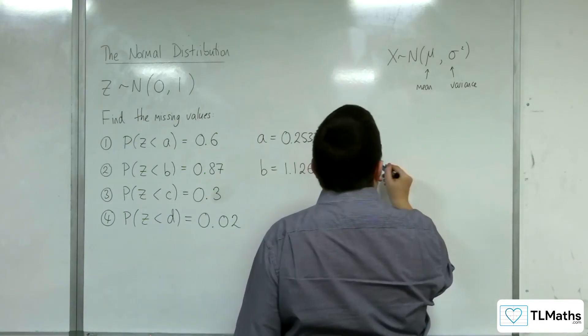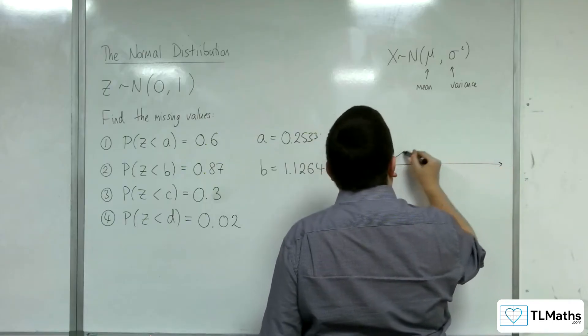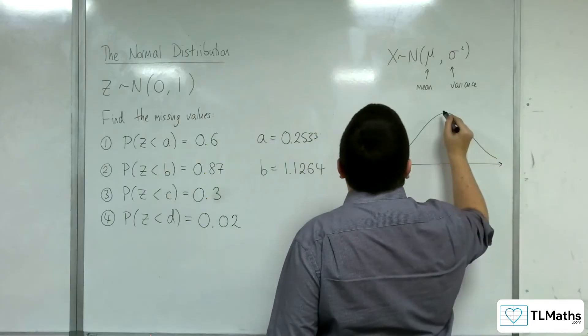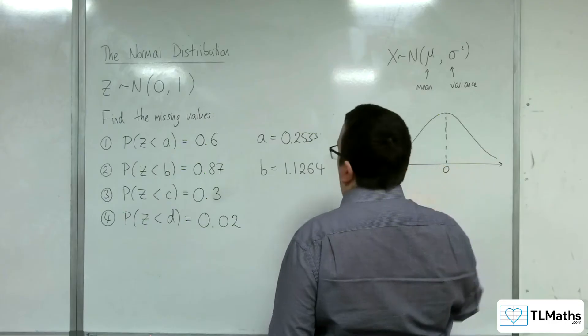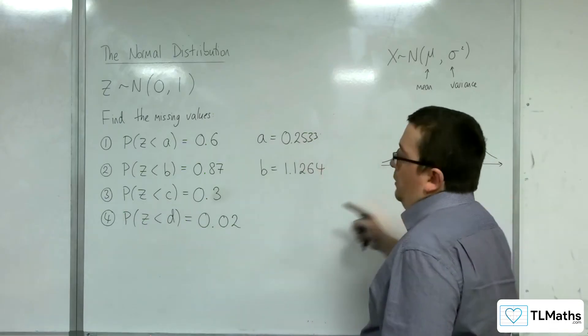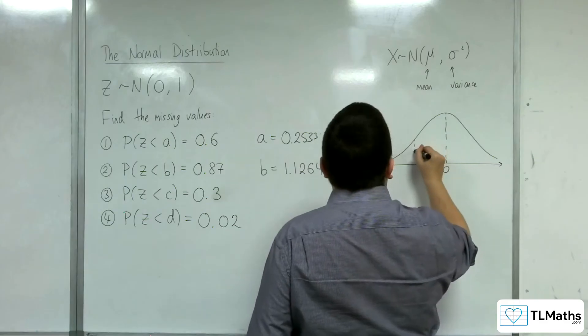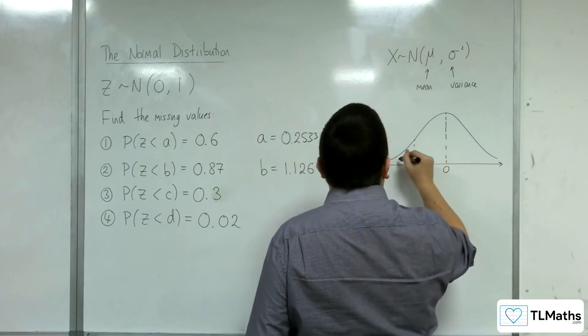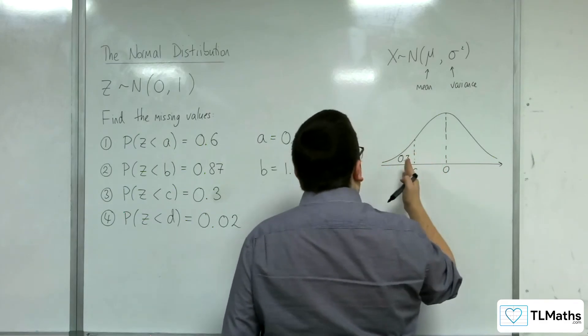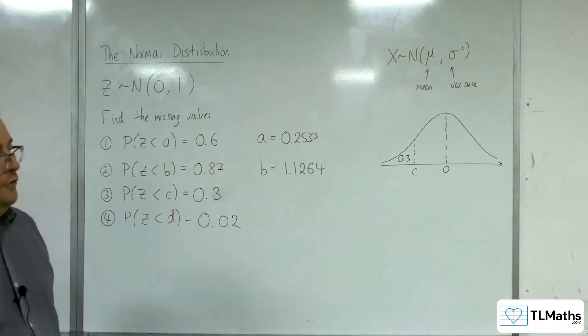Okay, now, for number 3. Somewhere along here is C, so that to the left is 0.3. So, that would mean that C would have to be over on this side, in order for the probability to the left to be 0.3.